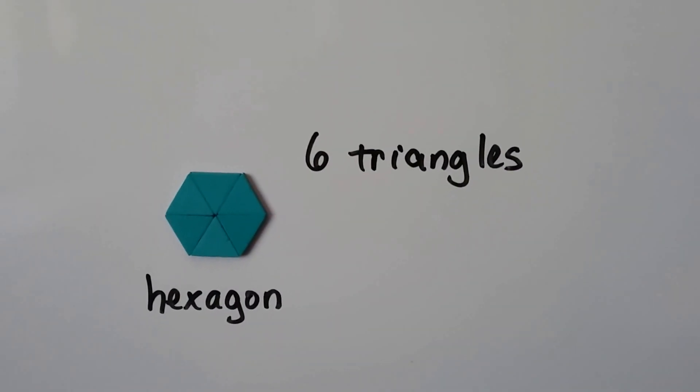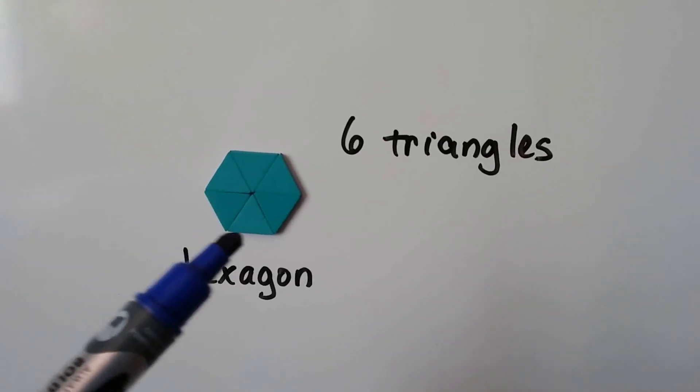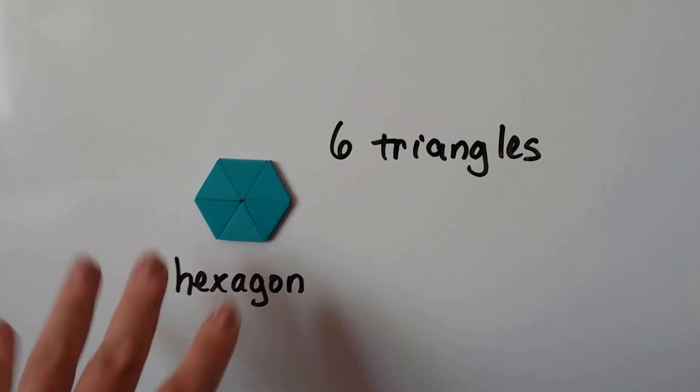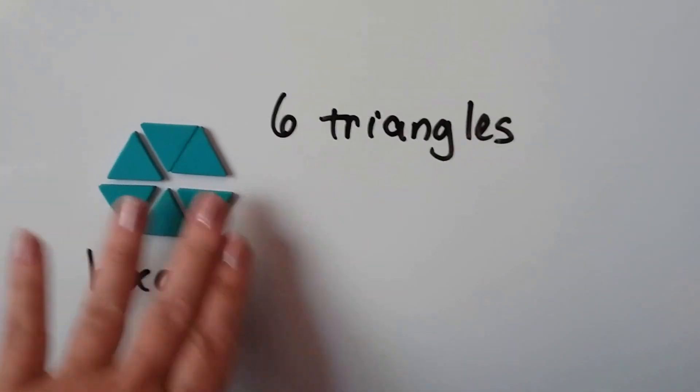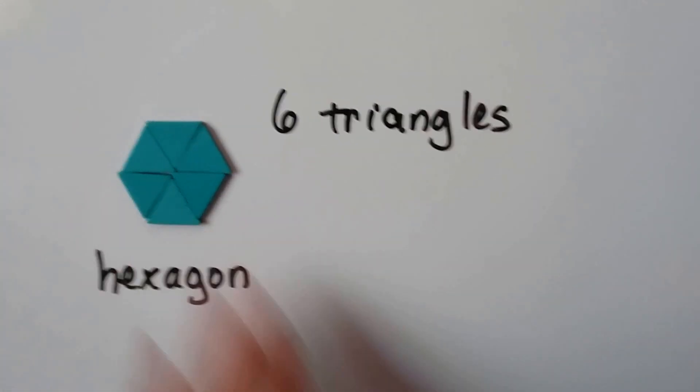I took six triangles and made a hexagon. One, two, three, four, five, six triangles. And when I put them all together, see there's the six triangles. When I put them all together, it made a hexagon.